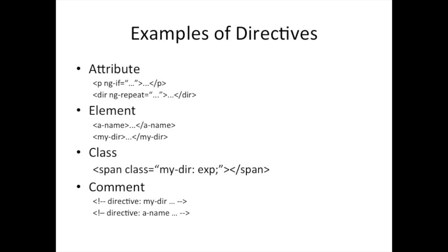A directive can also be an element — you use it just like an HTML element. For example, if I had a directive called a-name, I can just use it as an element directive. Or I could call it my-dir — whatever I choose to name it. In terms of using a directive as a class or in a comment, those are pretty straightforward, though you'll almost never see the comment one. The first two — attributes and elements — are what we'll really deal with.